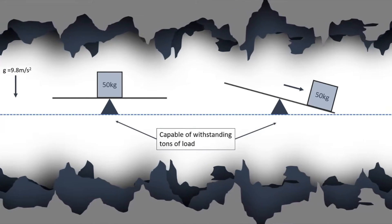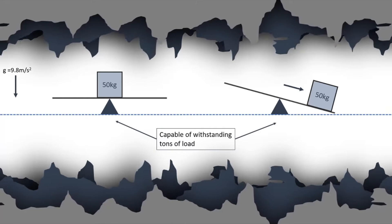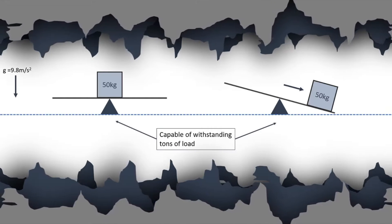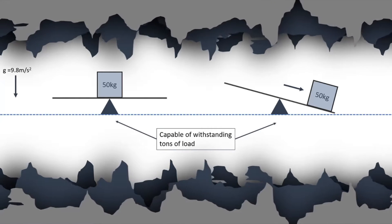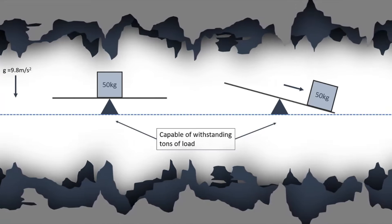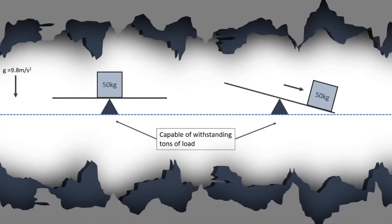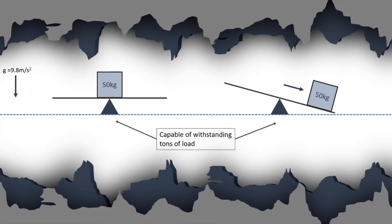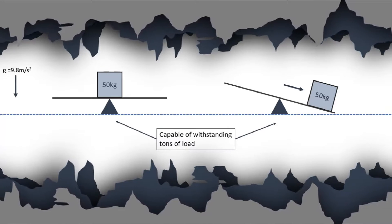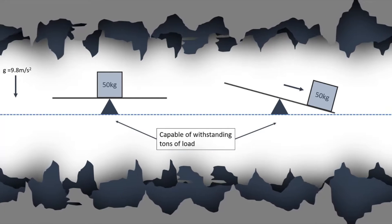Placing 50 kg perfectly at the center of the pivot base, the seesaw is balanced. But moving it from the middle makes the seesaw unbalanced. This imbalance is created due to the moment generated by the weight we have placed.